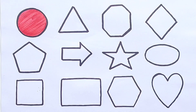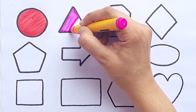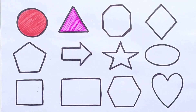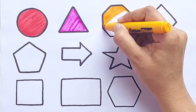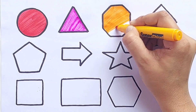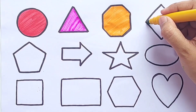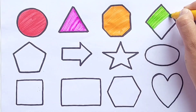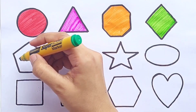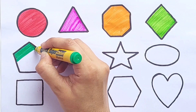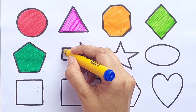Circle — Pink Color. Triangle — Orange Color. Octagon — Light Green Color. Green Color. Pentagon — Blue Color.